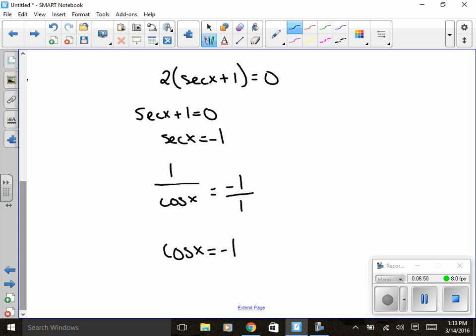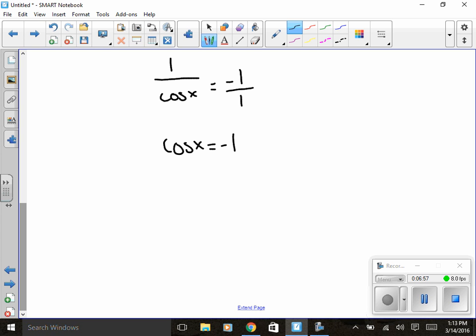But with that, you need to go then to your unit circle and figure out where cosine equals negative one. Again, I'm limiting myself to the interval of zero to pi, and I know that pi is my answer.